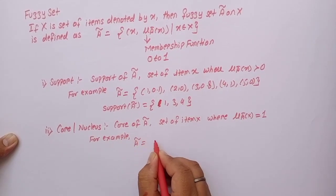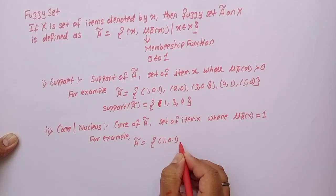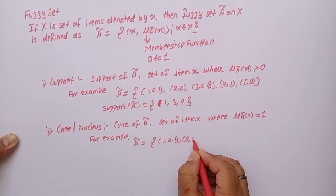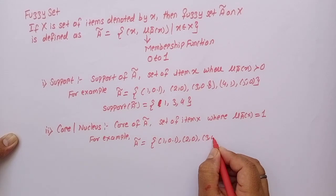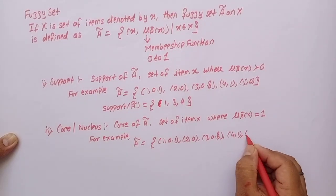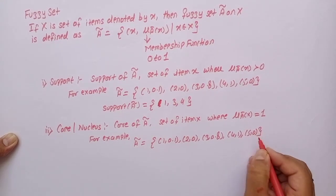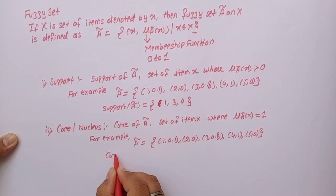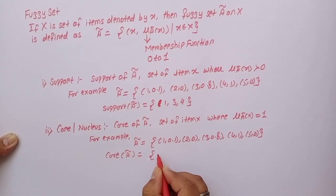For example, if fuzzy set A equals {(1, 0.1), (2, 0), (3, 0.8), (4, 1), (5, 0)}, then core of fuzzy set A will be equal to {4}.